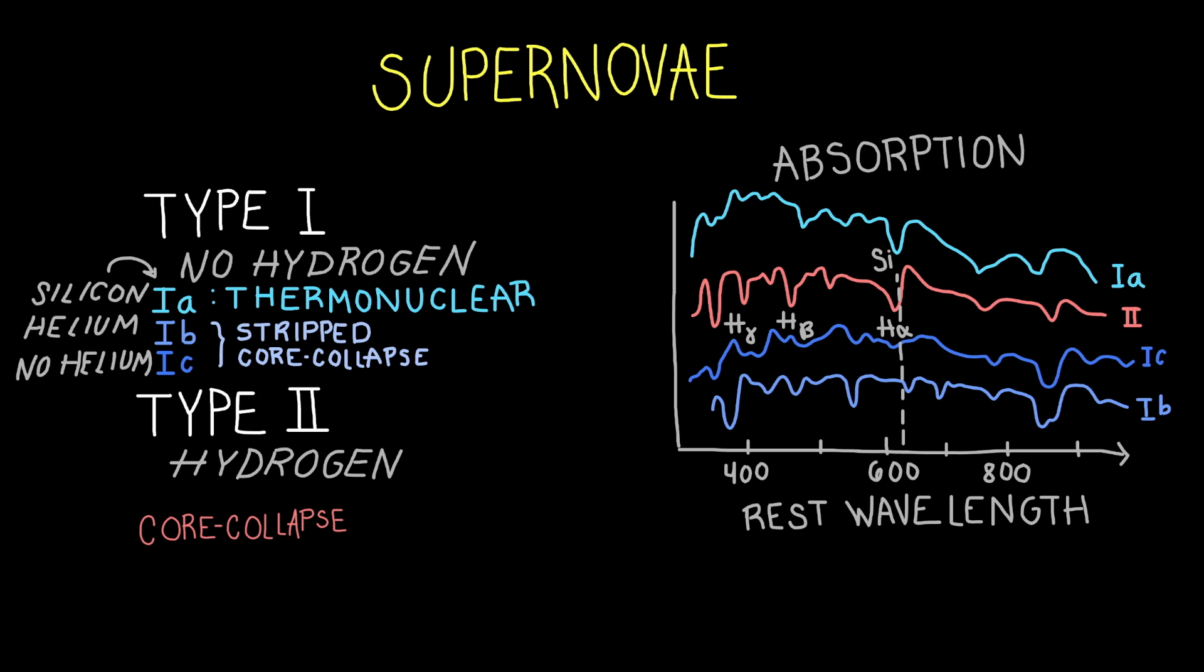That's just to break down a few of the different types of supernovae, but the ones that you really need to remember—the ones that are most relevant when we're talking about what we see in the world—are Type Ia and Type II supernovae.